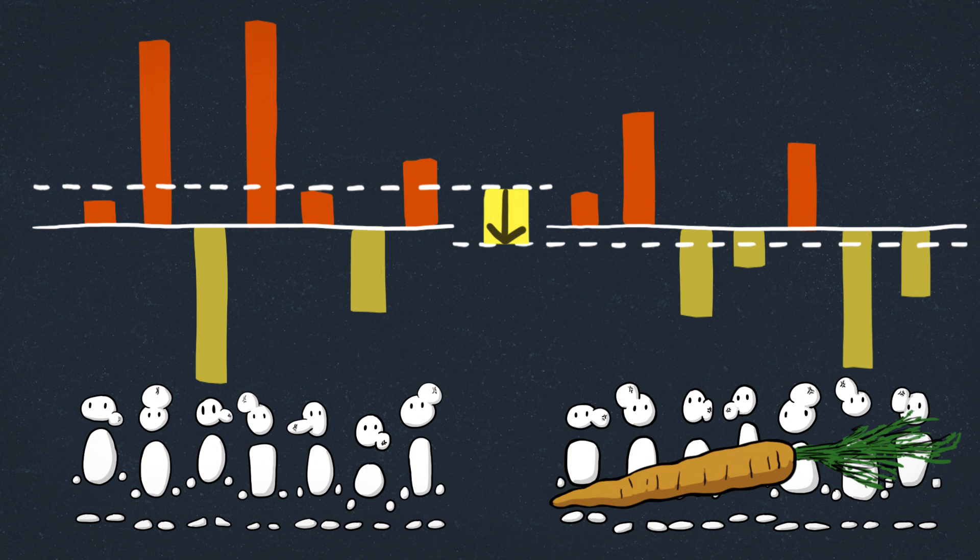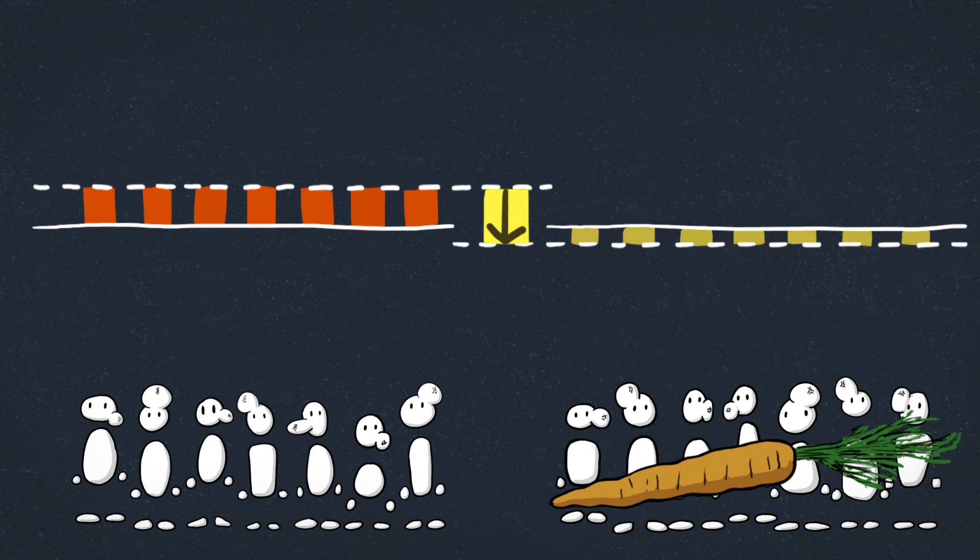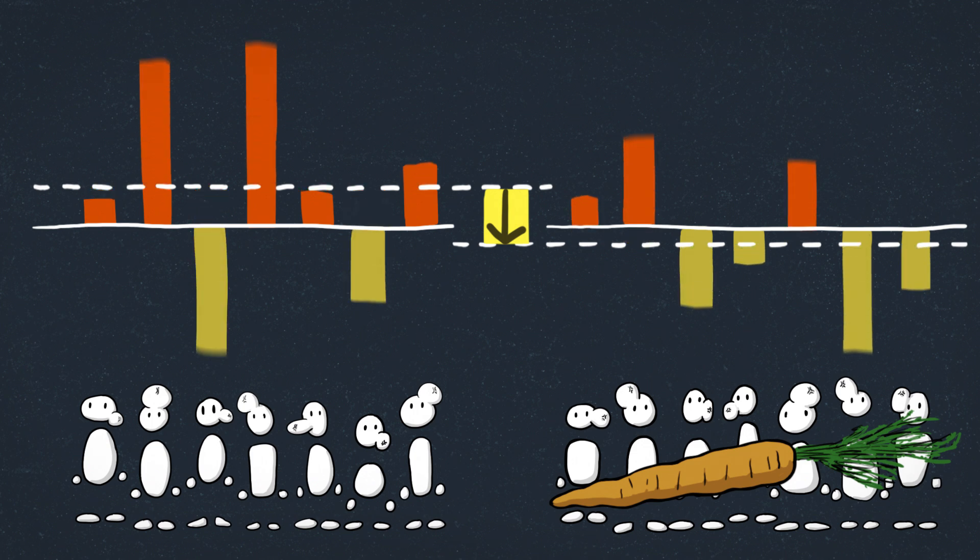If our results instead of looking like this, looked like this. Same average difference. But what are the odds of randomly putting everybody whose lumps shrunk in one group and grew in the other? Very low. It's like rolling all ones. Carrots would almost certainly be an important factor. Actually they look like the only factor. But in our experiment, is it just the other stuff affecting lump size?